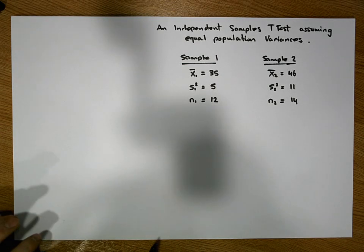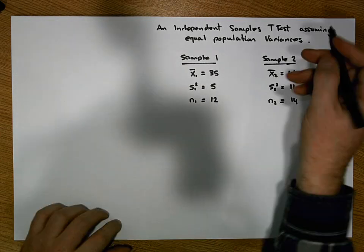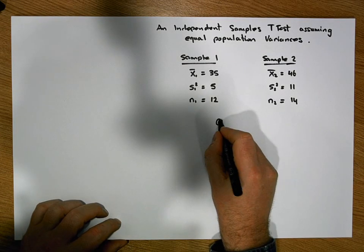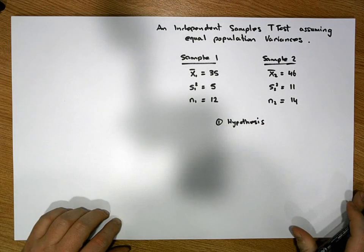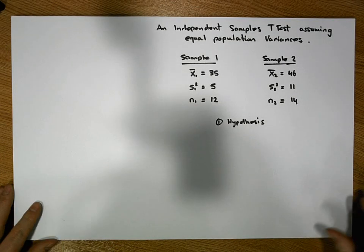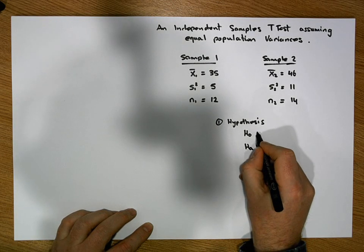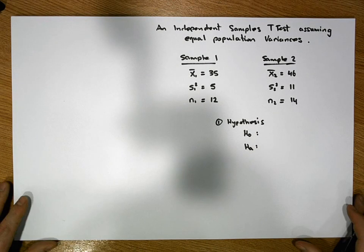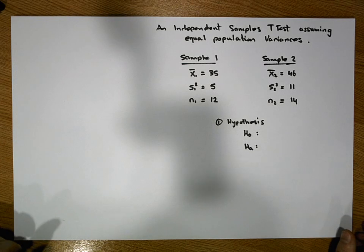Like any hypothesis test, there are four stages to the test. The first stage is to define the hypothesis. The hypothesis is always a statement about the population parameters. In this case, it's a statement about the population means that both samples have been drawn from. We have a null hypothesis and an alternative hypothesis. In this particular scenario, we're going to test whether the two samples have been drawn from populations that have different population means.